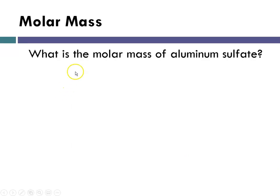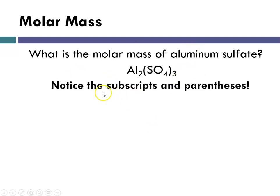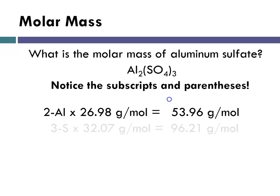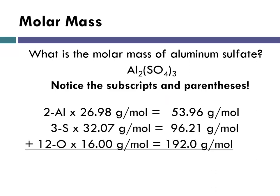So what about something like the molar mass of aluminum sulfate? Here's the formula for aluminum sulfate, and I want you to notice the subscripts and the parentheses. So in this case, there's two of these. There's 3 times 1, 3 of these, and 3 times 4, 12 of those. So 2 aluminums, 3 sulfurs, and 12 oxygens. And we add those up, we get 342.17 grams per mole. So you want to be particularly careful when there are parentheses.